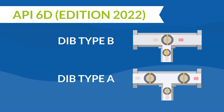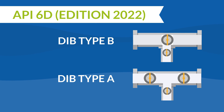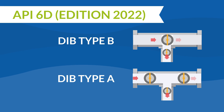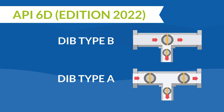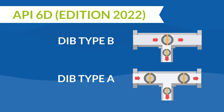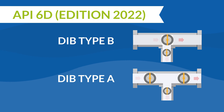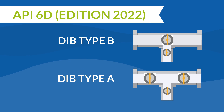For such an application, API-6D defines a DIB valve: a valve with two or more sealing elements, each of which in the closed position provides a seal against pressure from a single source, with a means of bleeding the cavity between the sealing elements.